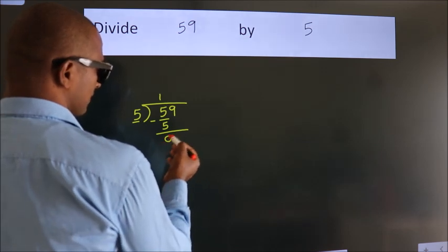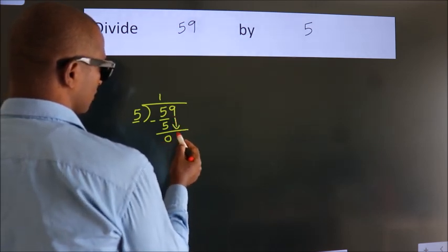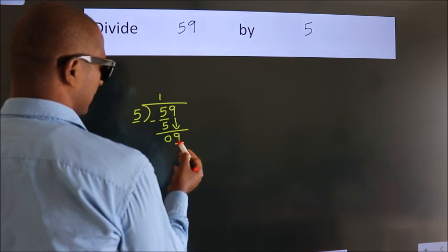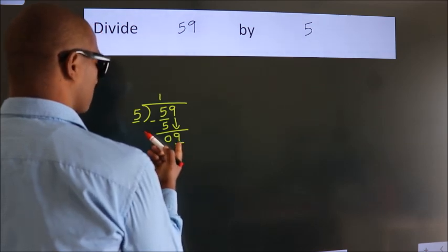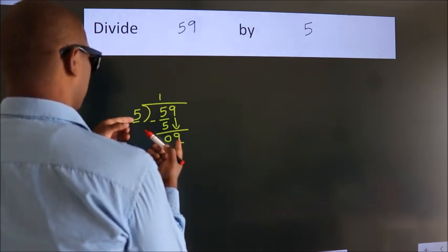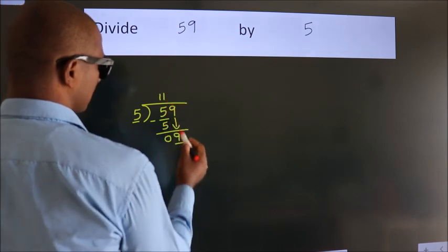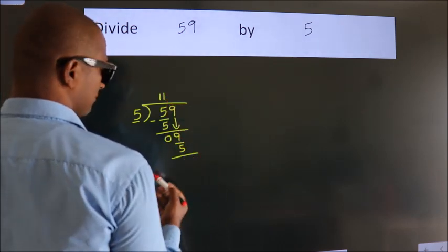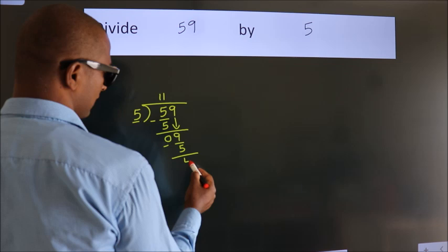After this, bring down the next number. So 9 down. So 9. A number close to 9 in the 5 table is 5 once, 5. Now we subtract. We get 4.